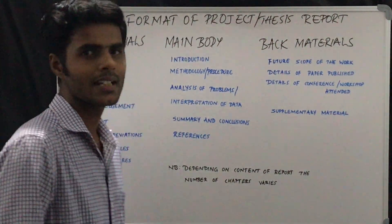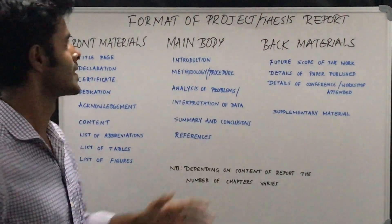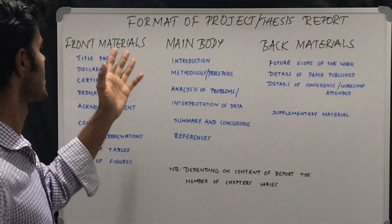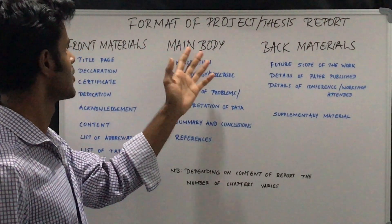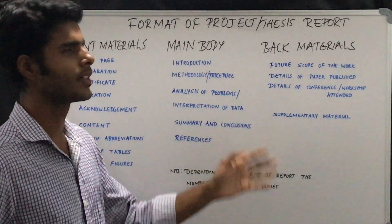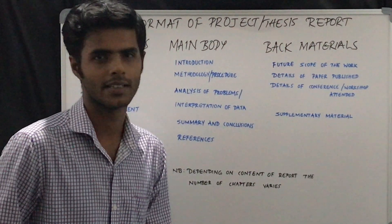So there are three main parts for a dissertation. The first one is front material, the second one is main body, and the third part is back materials.